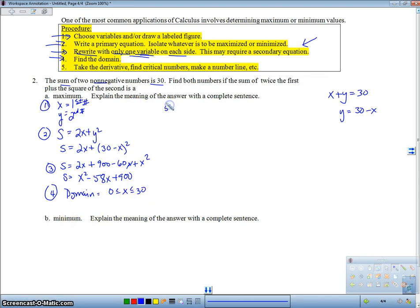So now I'm going to go to step five. Step five in my procedure is to do all the calculus stuff. So s prime, take the derivative, is 2x minus 58. Set that equal to zero, and I'm going to get x is equal to 29, and that is a critical number.